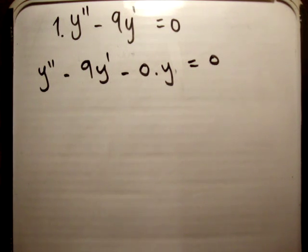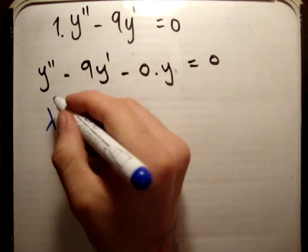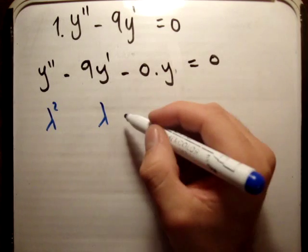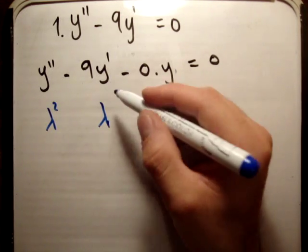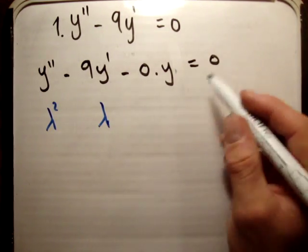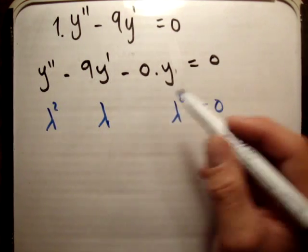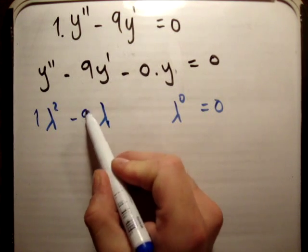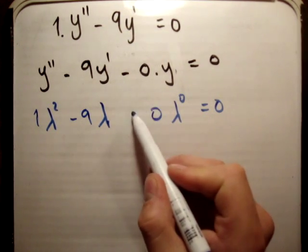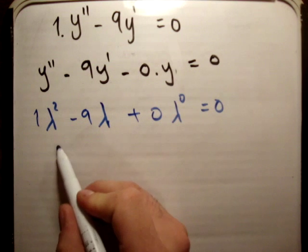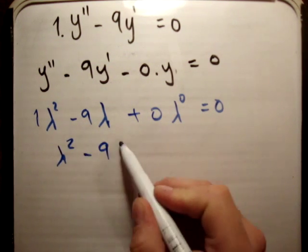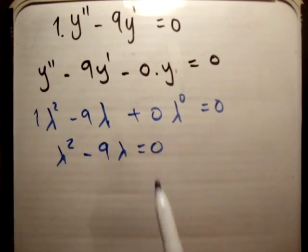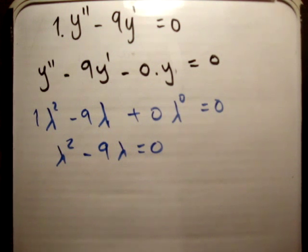Alright, the way to solve this is to solve the characteristic equation. So the characteristic equation is going to be lambda squared, lambda, and it's going to be equal to lambda to the nought. That is equal to 0. Put in our coefficients, this is going to be 1, this is going to be negative 9, this is going to be equal to 0. So we're going to get that lambda squared minus 9 lambda is equal to 0, just like our differential equation. So we need to solve this.